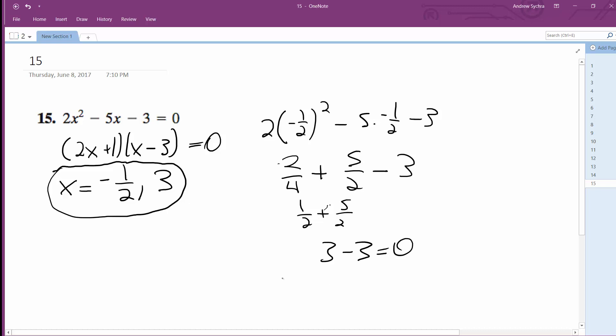And then 3 squared, so 2 times 9 minus 5 times 3 minus 3. So this is 18 minus 15 minus 3, which is equal to 0. All right, that validates our solutions. That's it.